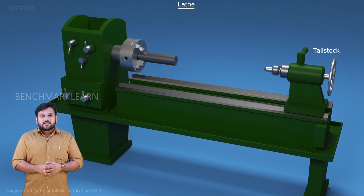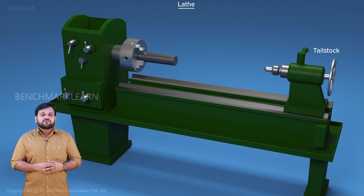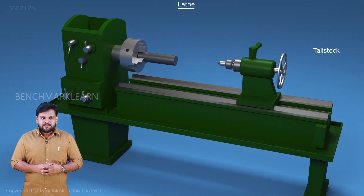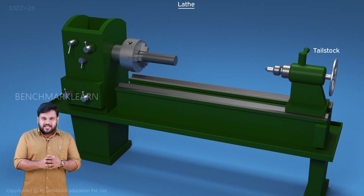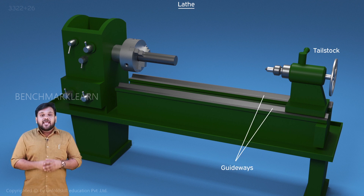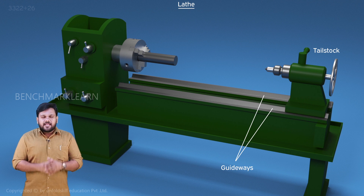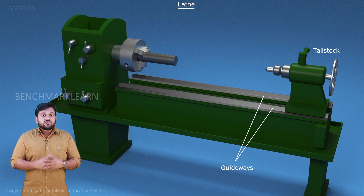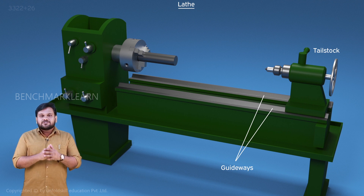The tailstock is mounted on the right end of the lathe and can be moved along the guideways on the bed. It can be clamped at any position on the guideways according to requirement. The tailstock supports the right end of the workpiece and is also used for supporting tools like a drill bit during drilling operations on the lathe.